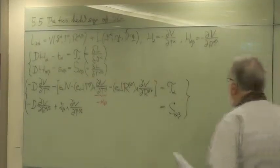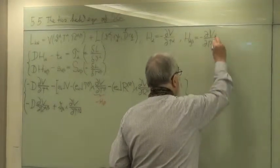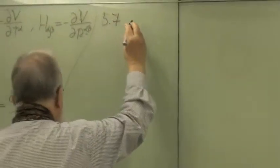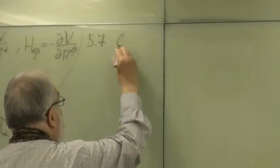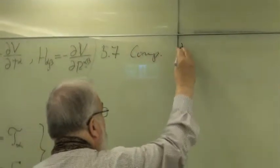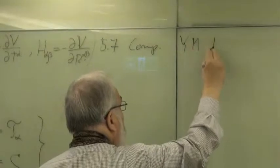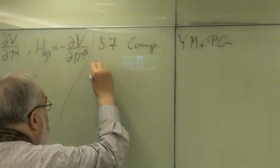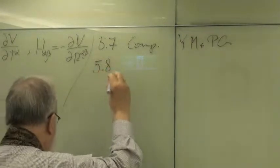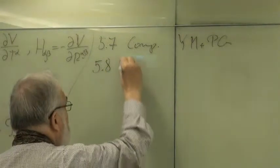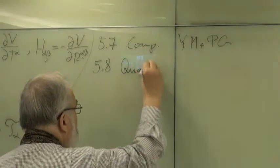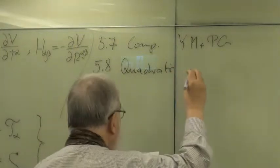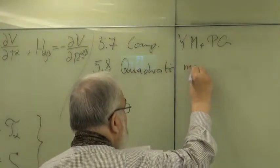So skipping section 5-7, which you can just read in our book — a comparison between Yang-Mills and Poincaré gauge theory — I start with section 5-8: the quadratic master Lagrangian. I call it the master Lagrangian because I think it's the final Lagrangian in this quadratic theory.